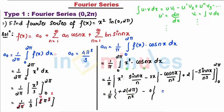So finally I can cancel out π and π, so I get aₙ as 4 by n².